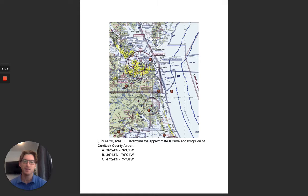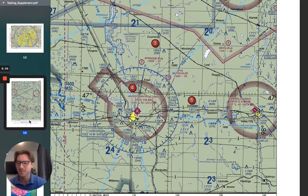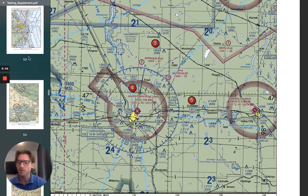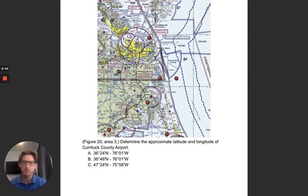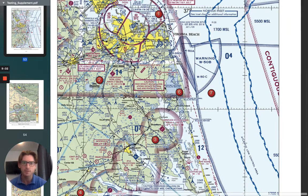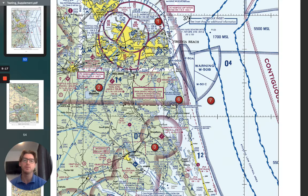Determine the latitude and longitude of Curituck County Airport. We're going to go to figure 20, area 3 — that's page 53. Back to my example from earlier. The question is to determine the approximate latitude and longitude. I need to find some numbers on these lines. I have a 37 — remember, 37 is with this line right above it going laterally, so that is a line of latitude, meaning it's north or the northern hemisphere. So we are 37 degrees north of the equator.